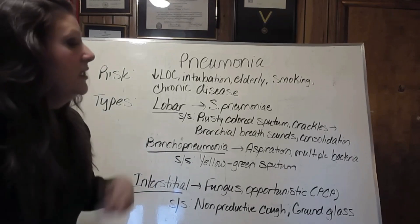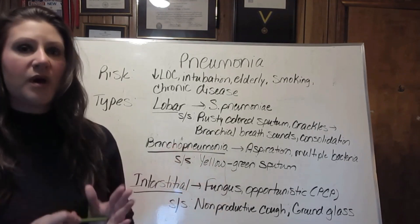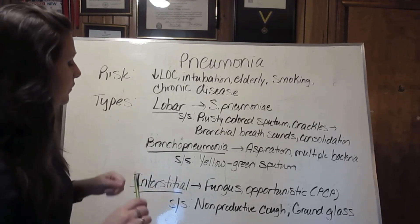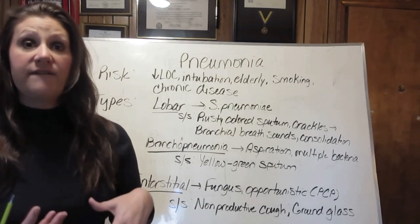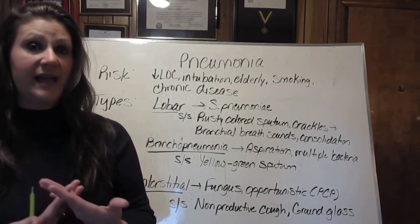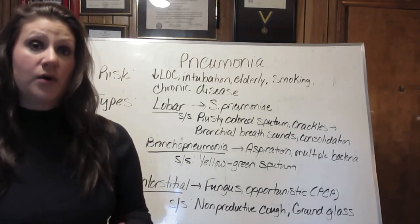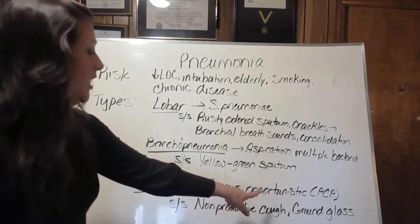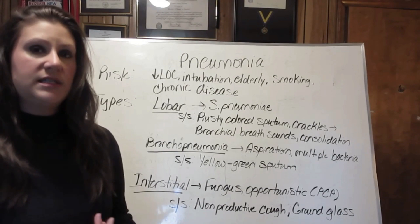Finally, we have Interstitial Pneumonia — the type we don't want anybody to get. It has the highest mortality rate and is the most difficult to treat. It mostly affects severely immunocompromised patients, like HIV and AIDS patients, those who have had organ transplants, or those on high-dose immunosuppressants and corticosteroids.